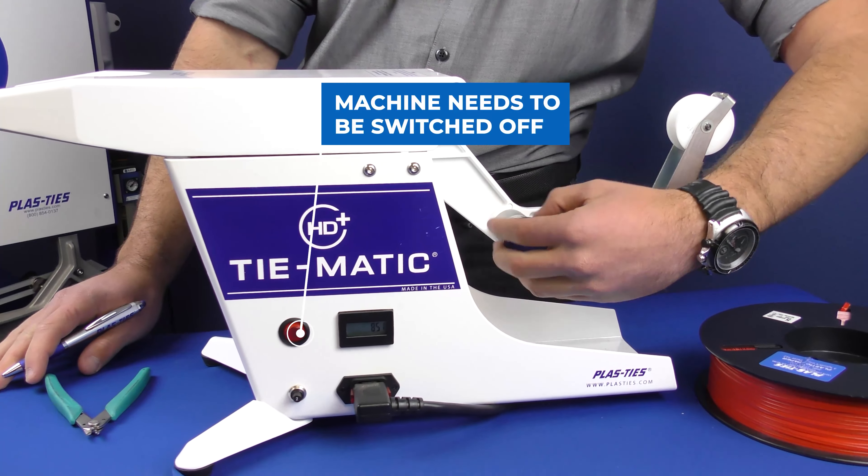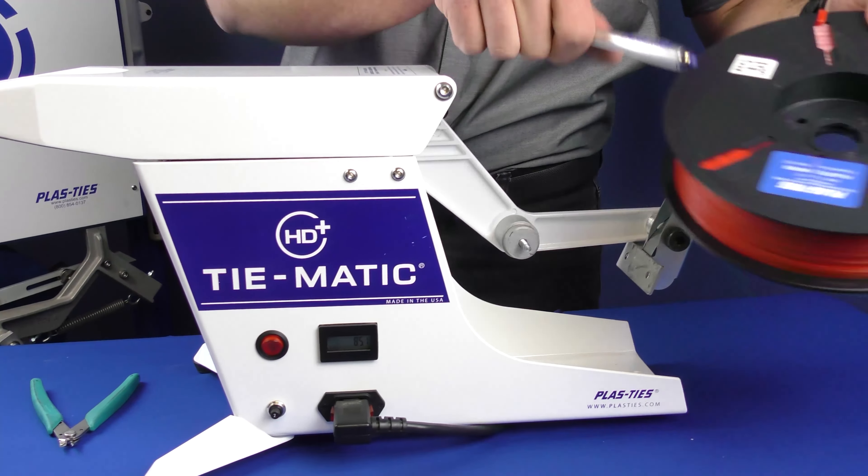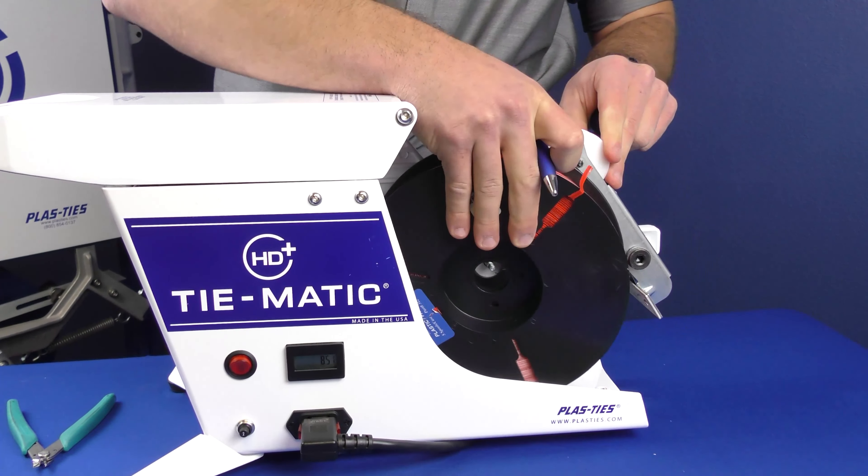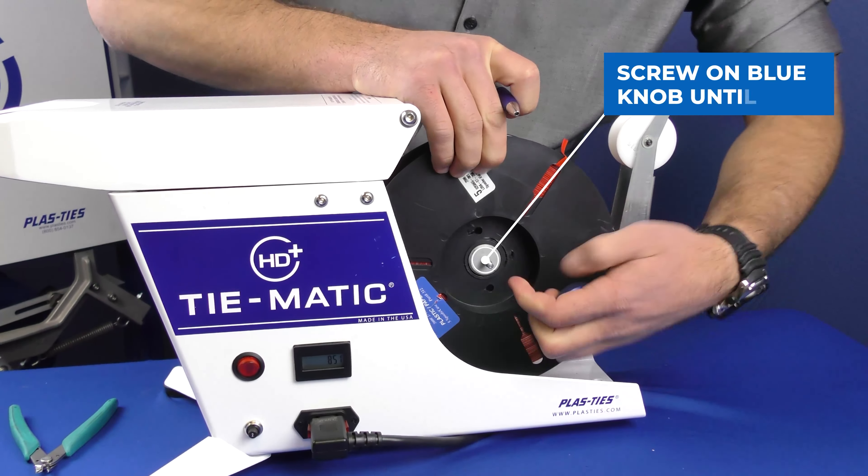Primero desatornille y retire la perrilla azul. Coloque el carrete en el poste con la calconomía hacia afuera. Atornille la perrilla azul de nuevo.